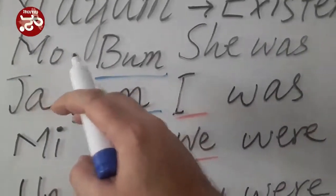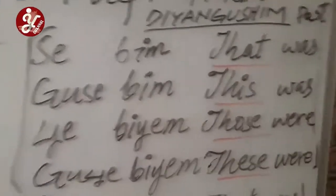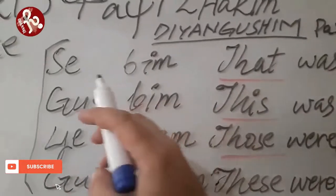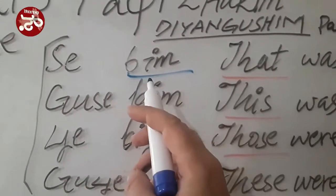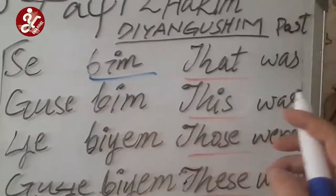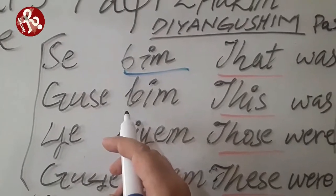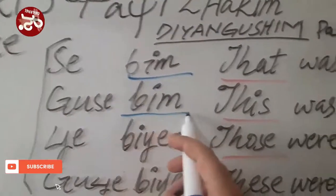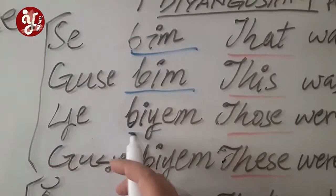Now we will come to the other part: the non-living beings and the animal part. Here we use 'Se Bim' — now we will not say Boom, we will say Se Bim, meaning 'that was' — for non-living beings or animals. Guse Bim means 'this was', and Se Bim means 'those were'.